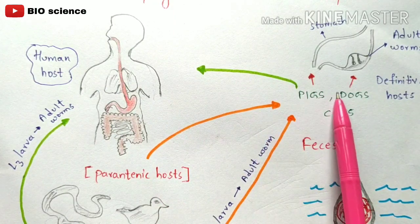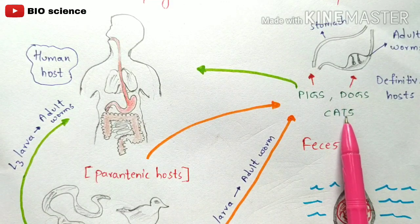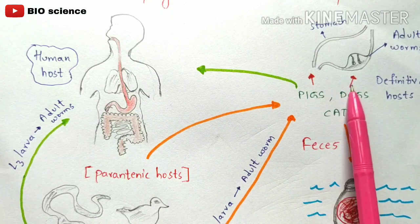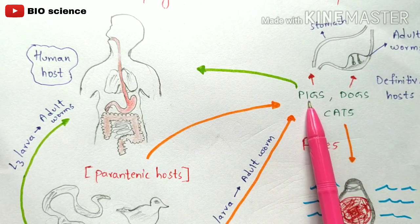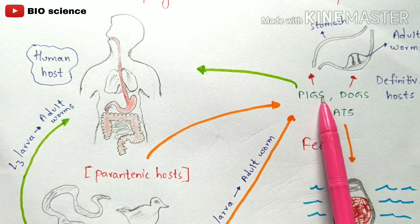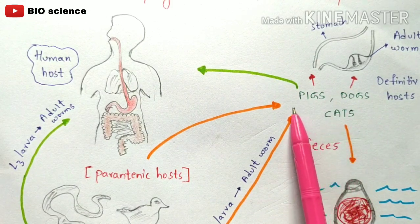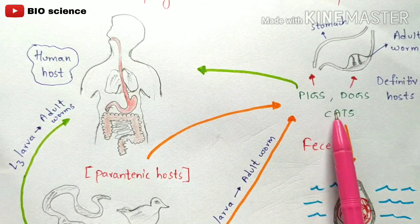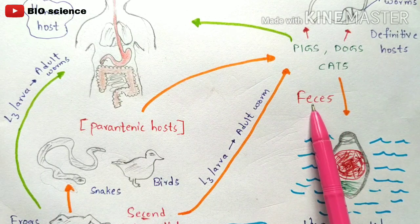The life cycle begins with definitive hosts — examples include pigs, dogs, and cats. These definitive hosts are infected with Gnathostomiasis, meaning their stomachs contain Gnathostoma spinigerum or Gnathostoma hispidum parasites. They release eggs through the reproduction process, and those eggs are released out via fecal material excreted by pigs, dogs, or cats. These animals move towards water sources like ponds, releasing their fecal material — and along with it, the eggs — into the water.